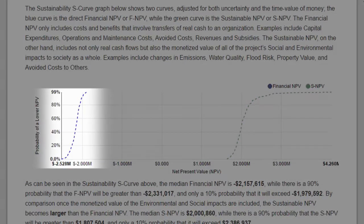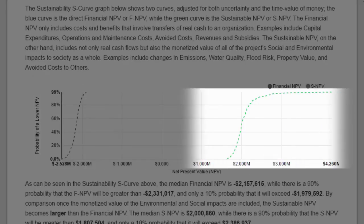One can see both the narrow NPV, based purely on traditional financial metrics, and the sustainable NPV, which incorporates societal costs and benefits.